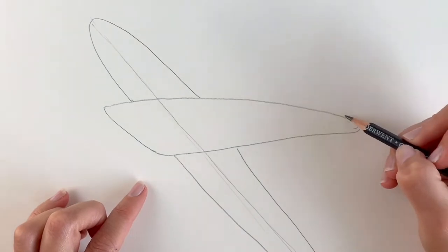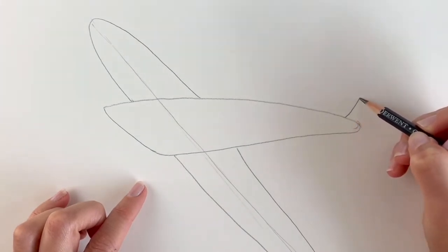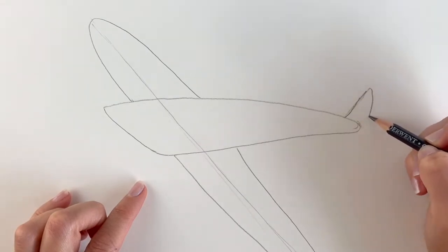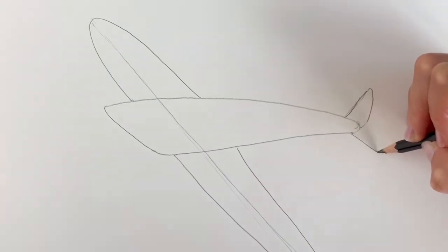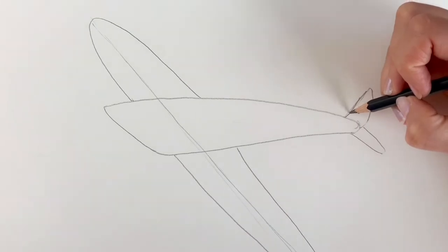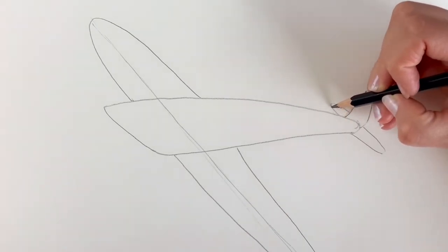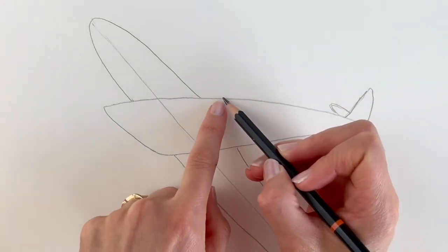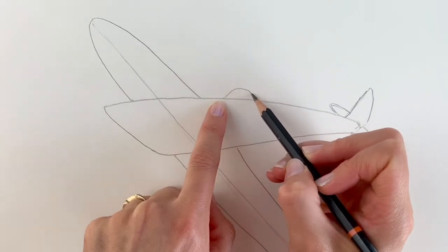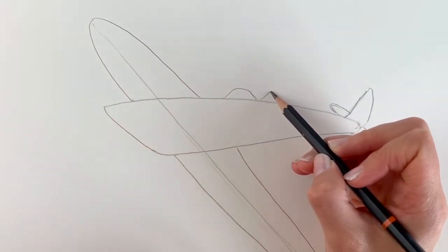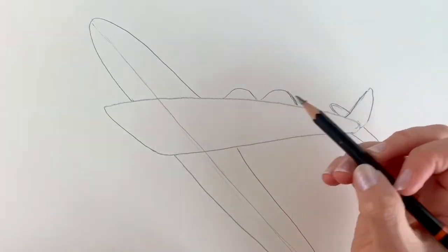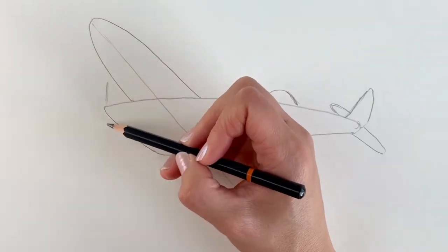Now for the tail, so just a shape coming up like this, coming around and then the other part of the tail. Just like that and then the other part just peeping out from behind here. And now for two little lumps here. One lump there and one lump there, and you can guess that's going to be the cockpit. There we go. And then just a little line here for the propeller.